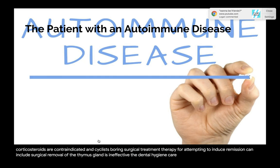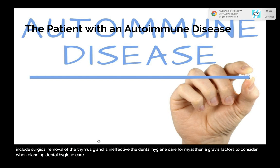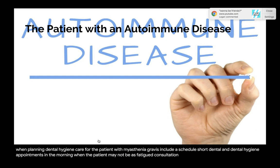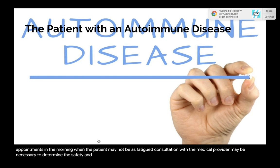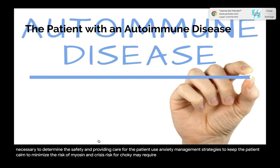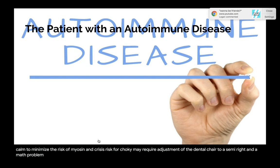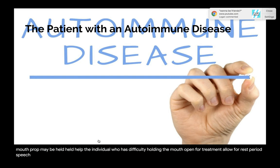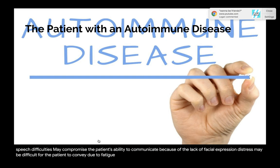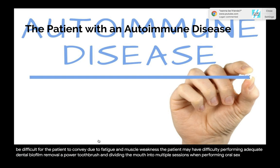Dental hygiene care for myasthenia gravis: schedule short appointments in the morning when the patient may not be as fatigued. Consultation with the medical provider may be necessary to determine the safety of providing care. Use anxiety management strategies to minimize the risk of myasthenic crisis. Risk for choking may require adjustment of the dental chair to a semi-upright position and minimal use of water to avoid aspiration. A mouth prop may help the individual who has difficulty holding the mouth open. Allow for rest periods. Speech difficulties may compromise the patient's ability to communicate, and distress may be difficult to convey due to fatigue and muscle weakness.